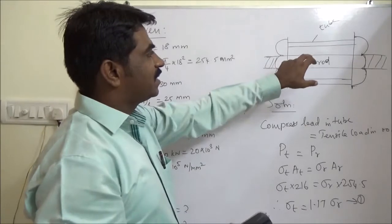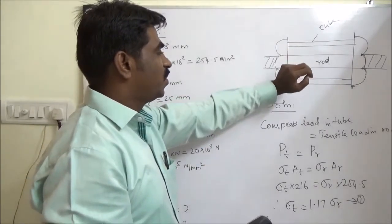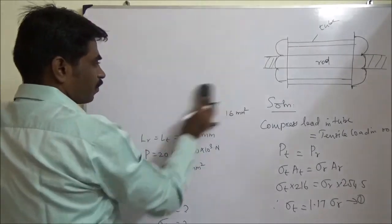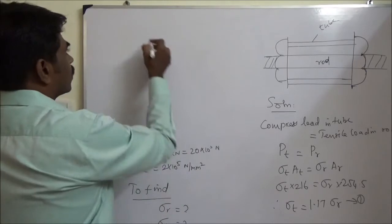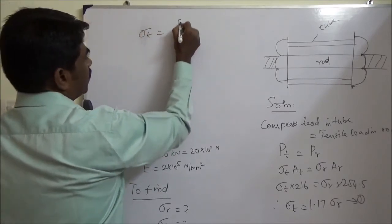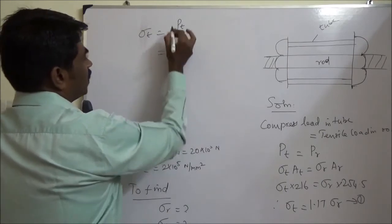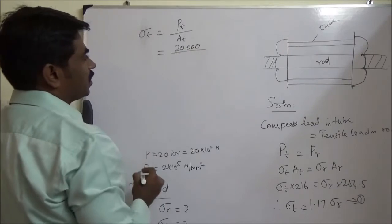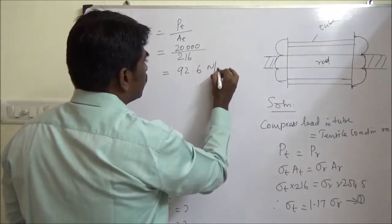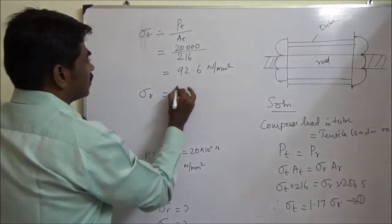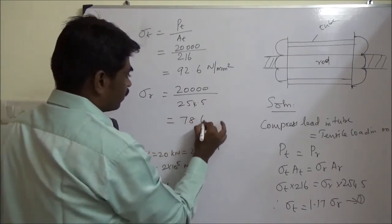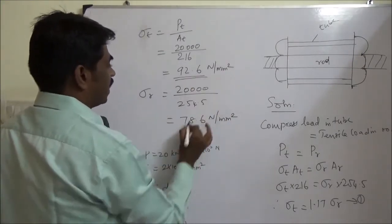And in order to find out the stresses in rod, stresses in tube, because of this 20 load, it is 20 kilo Newton, it is very straightforward. Sigma T equals Pt by AT. So Pt 20, 20,000, 2.6 Newton per mm square. Similarly, 254.5, the stress. So these are the answers for the first part.